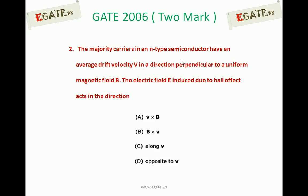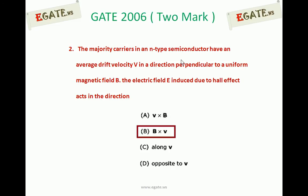The majority carriers in an n-type semiconductor have an average drift velocity V in a direction perpendicular to a uniform magnetic field B. The electric field E induced due to the Hall effect acts in the direction. The correct answer for this one is B — B cross V is the answer.